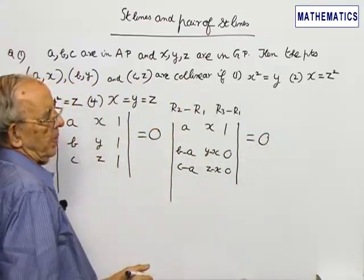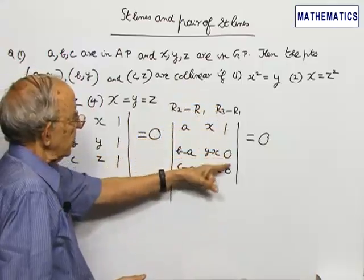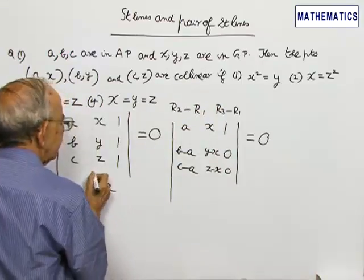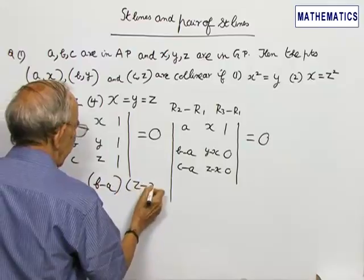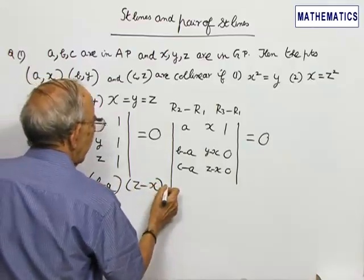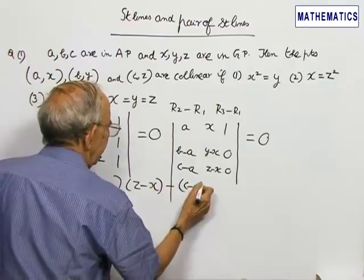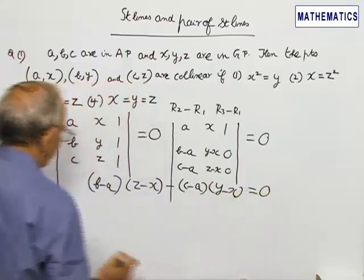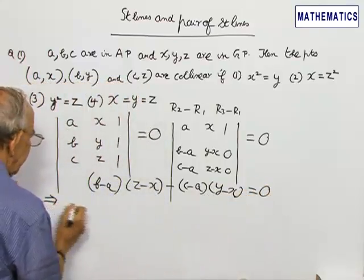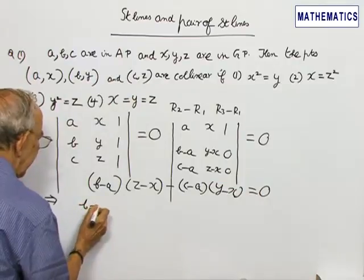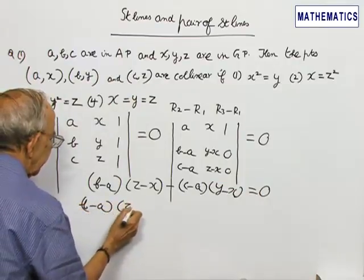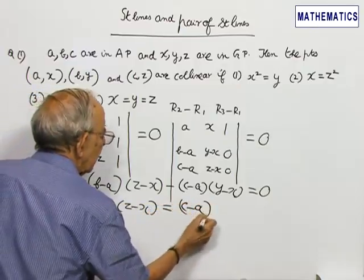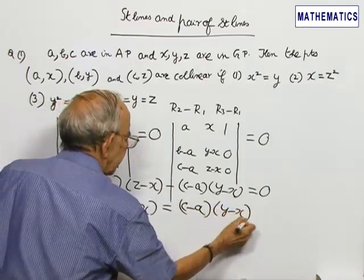Expanding the determinant in terms of the elements of the last column, I get (B minus A) into (Z minus X) minus (C minus A) into (Y minus X) is equal to 0. This implies (B minus A) into (Z minus X) is equal to (C minus A) into (Y minus X).